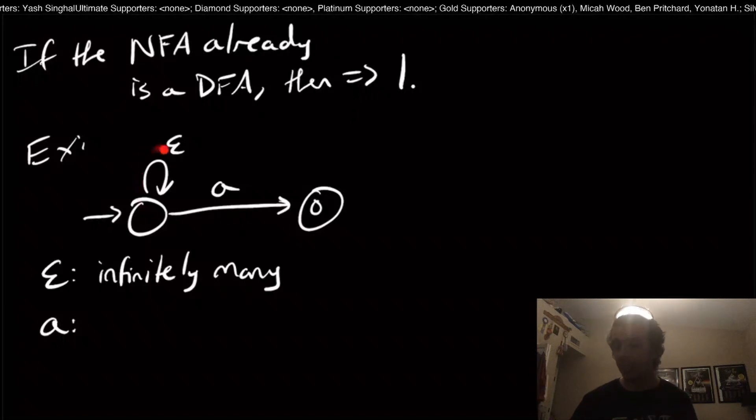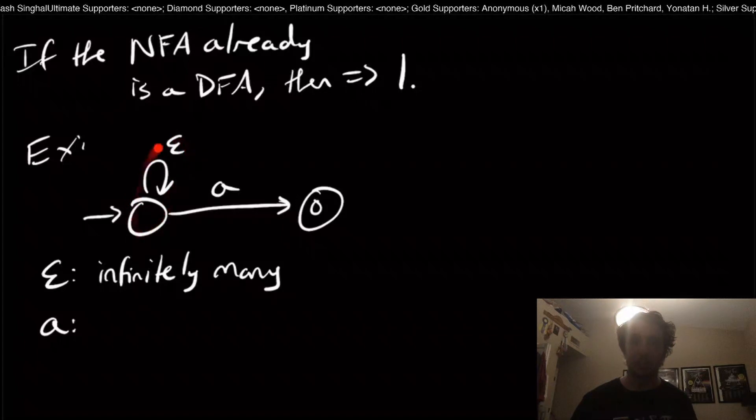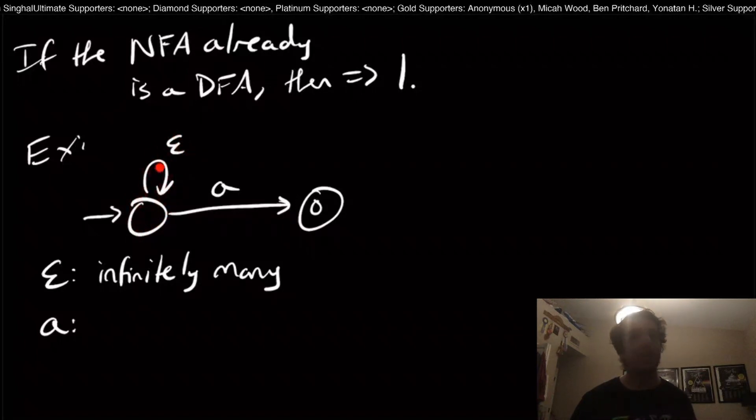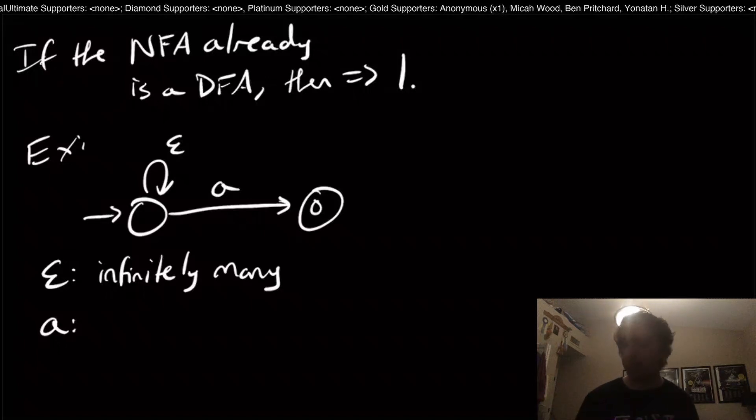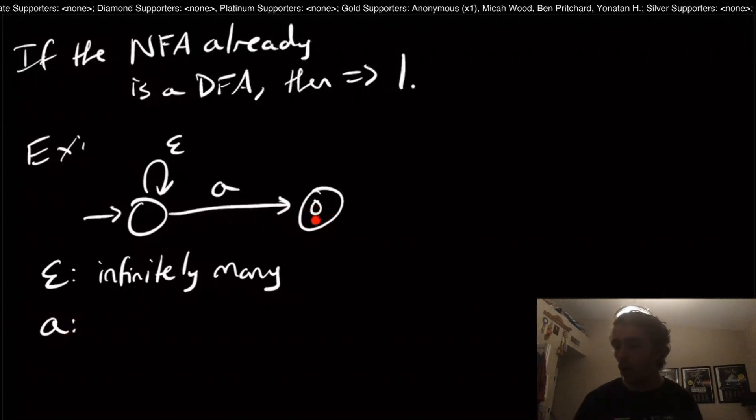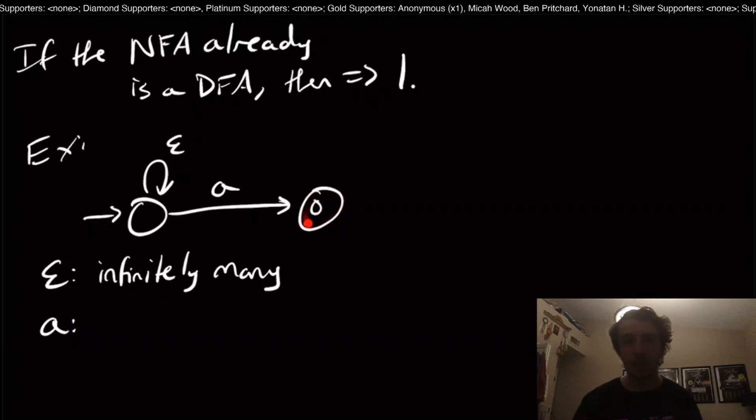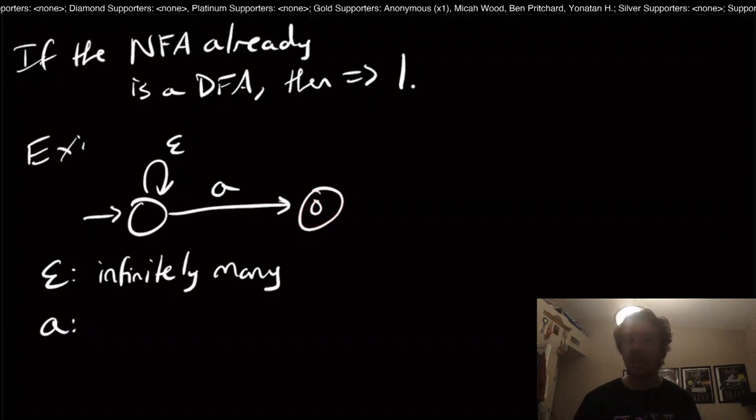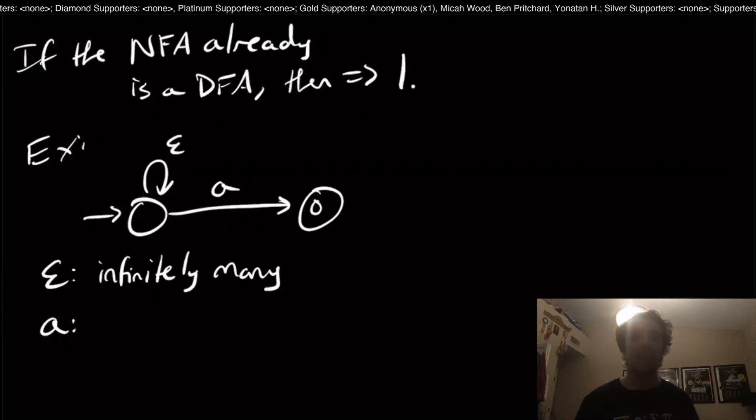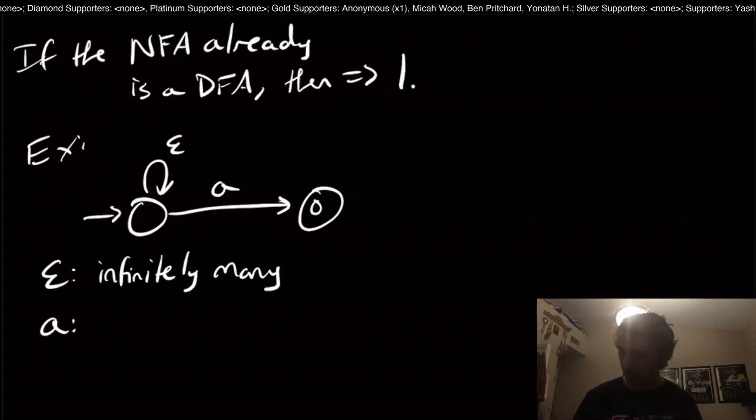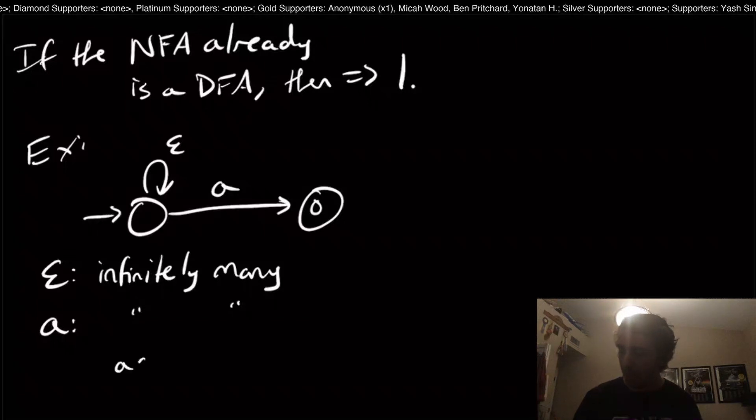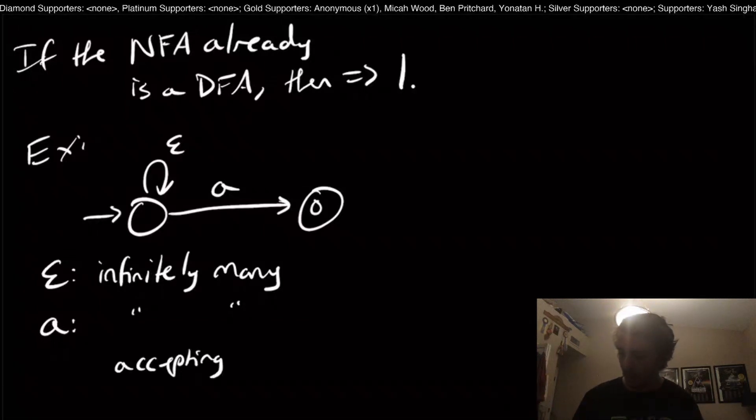But for the same reason, we can be stuck here and take the epsilon transition self loop as many times as we want, because it doesn't read anything. What is more interesting is that the computations for A always land in a final state, which means we can get infinitely many accepting computations.